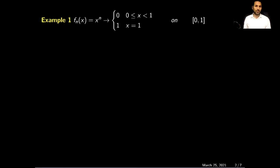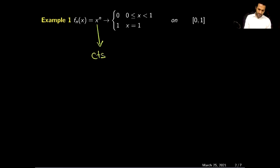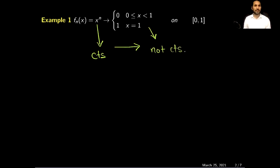In our previous video, we observed that a sequence of continuous functions may or may not converge to a continuous function. For example, a sequence where each function is continuous may converge to a limit function that is no longer continuous. This is a strange behavior under pointwise convergence. However, this behavior is not permitted under uniform convergence, which is the main topic of our discussion today.